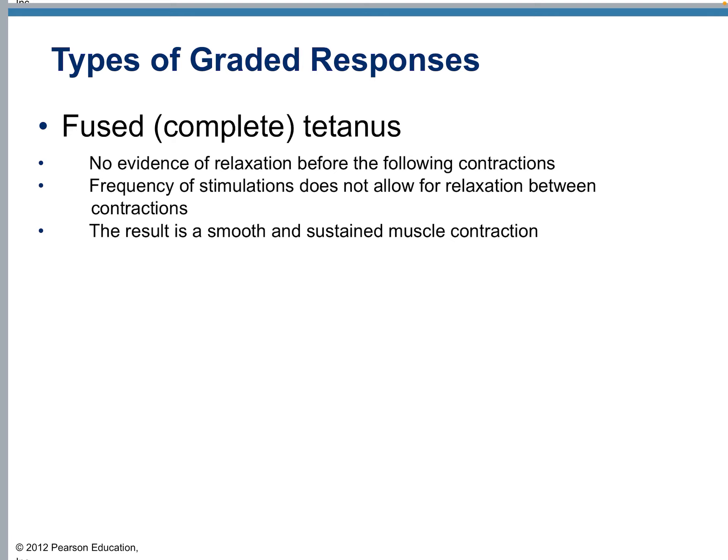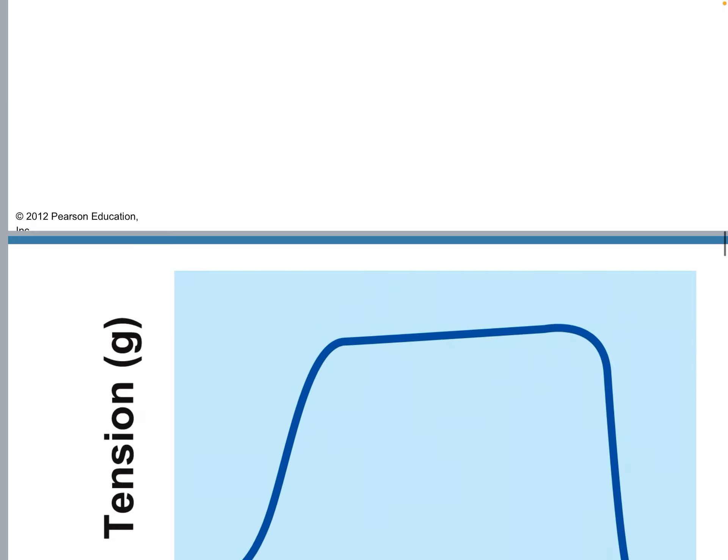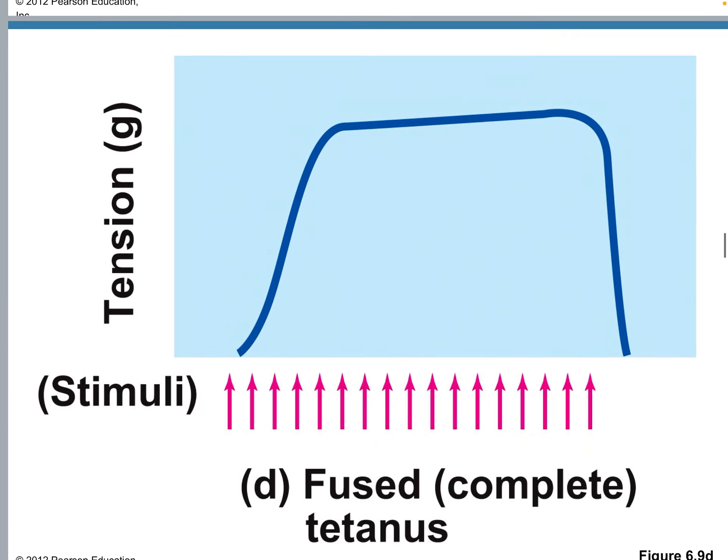Think of it as lifting a baby and holding it in your arms. Your arms don't get to relax, but you don't see any shaking. They just stay in that fused tetanus state — they don't move. This is what complete tetanus would look like: a smooth and continuous contraction with no visible movement between peaks.